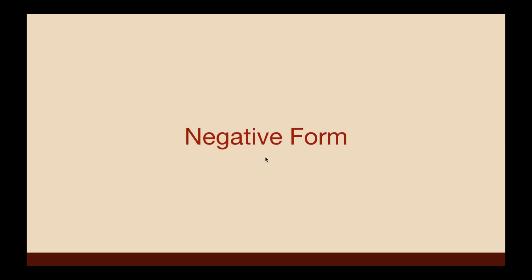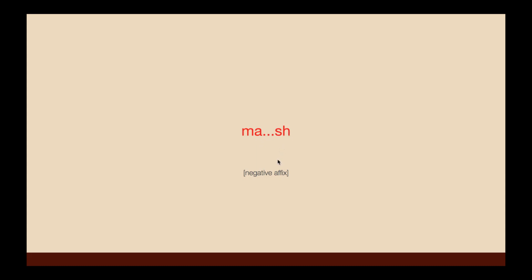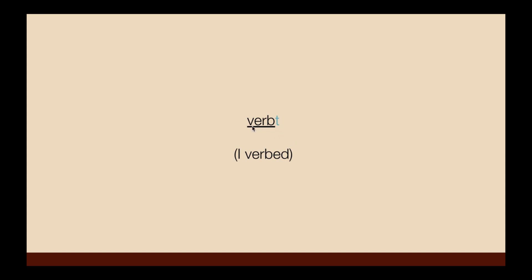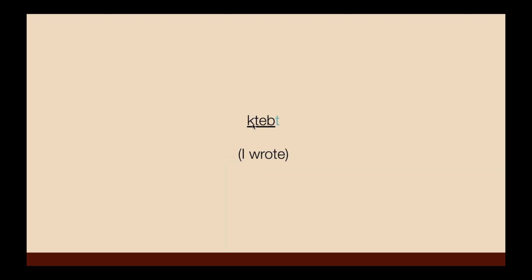Now let's look at the negative form. We attach 'ma' at the beginning and the end of the verb. So we've got: ma + verb + subject suffix + ma, surrounding the whole verb. So 'ma verb-t ma' means 'I didn't verb.'